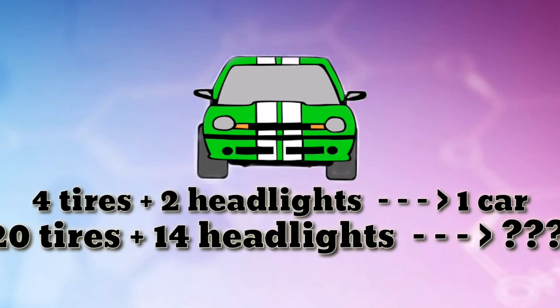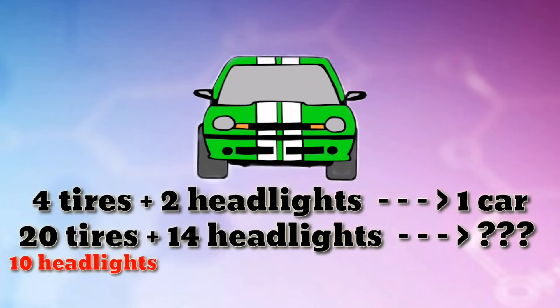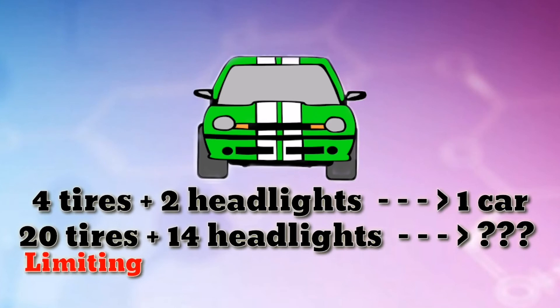There are 20 tires and 14 headlights, so there are two ways of looking at this problem. For 20 tires, 10 headlights are required, whereas for 14 headlights, 28 tires are required. Because there are not enough tires, tires are the limiting reactant.